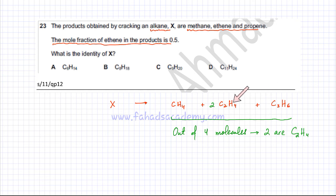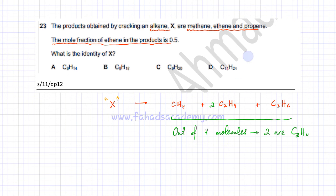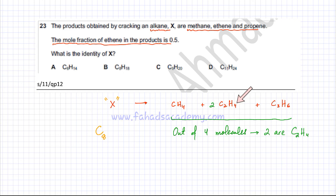Now I just need to find out what X is. All these products are obtained when X was cracked, so I sum up all the atoms. Counting carbons: one in methane, four from two ethene molecules, and three from propene — that's a total of eight carbons. Counting hydrogens: four plus eight plus six equals eighteen. So X is C8H18.